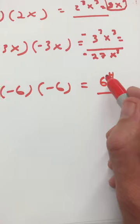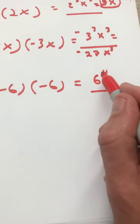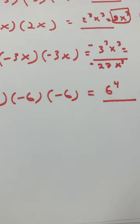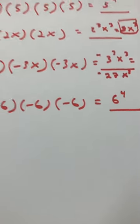That equals 6 times 6 times 6 times 6, but I'll just leave it like that. So that gives you an idea of how to write things in exponential form.